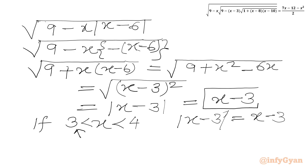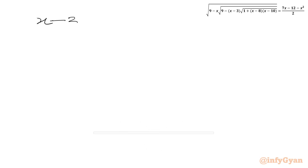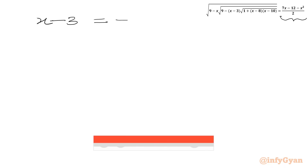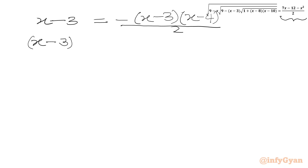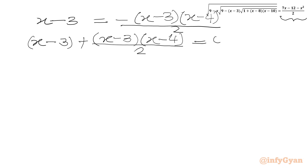This is our LHS for x to be real. Now we will put this value to our left hand side. So x minus 3 on LHS equals on RHS minus x minus 3 times x minus 4 over 2. Taking all terms to LHS: x minus 3 plus x minus 3 times x minus 4 over 2 equals 0.